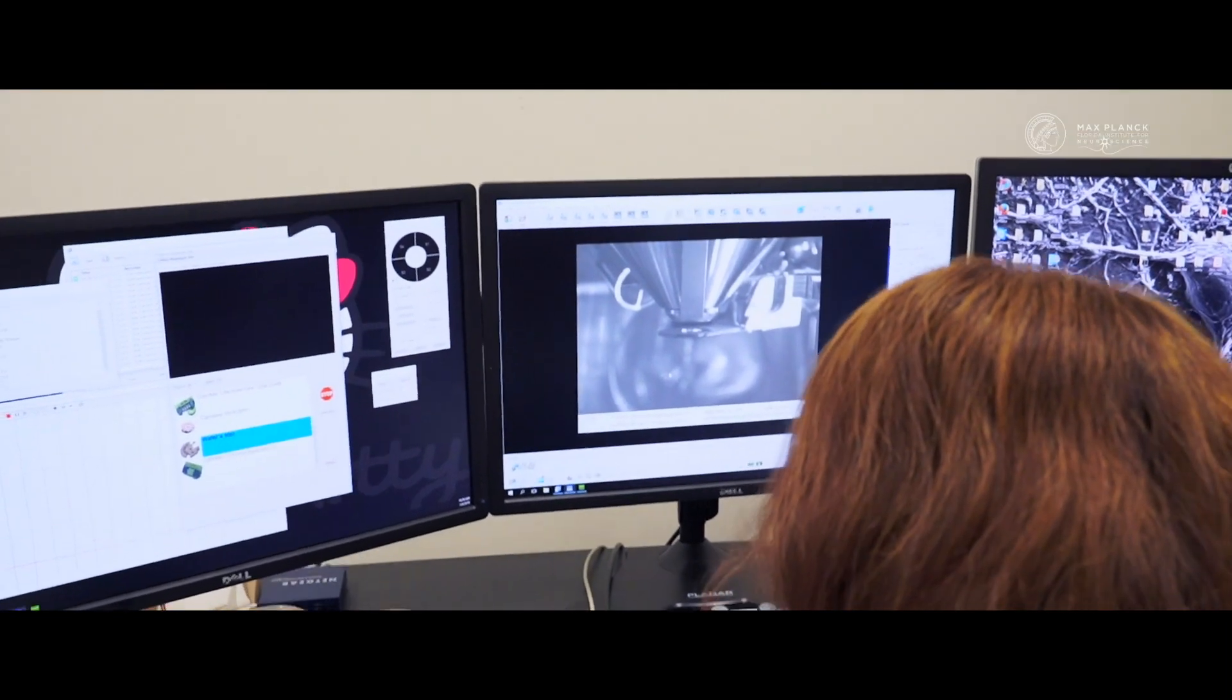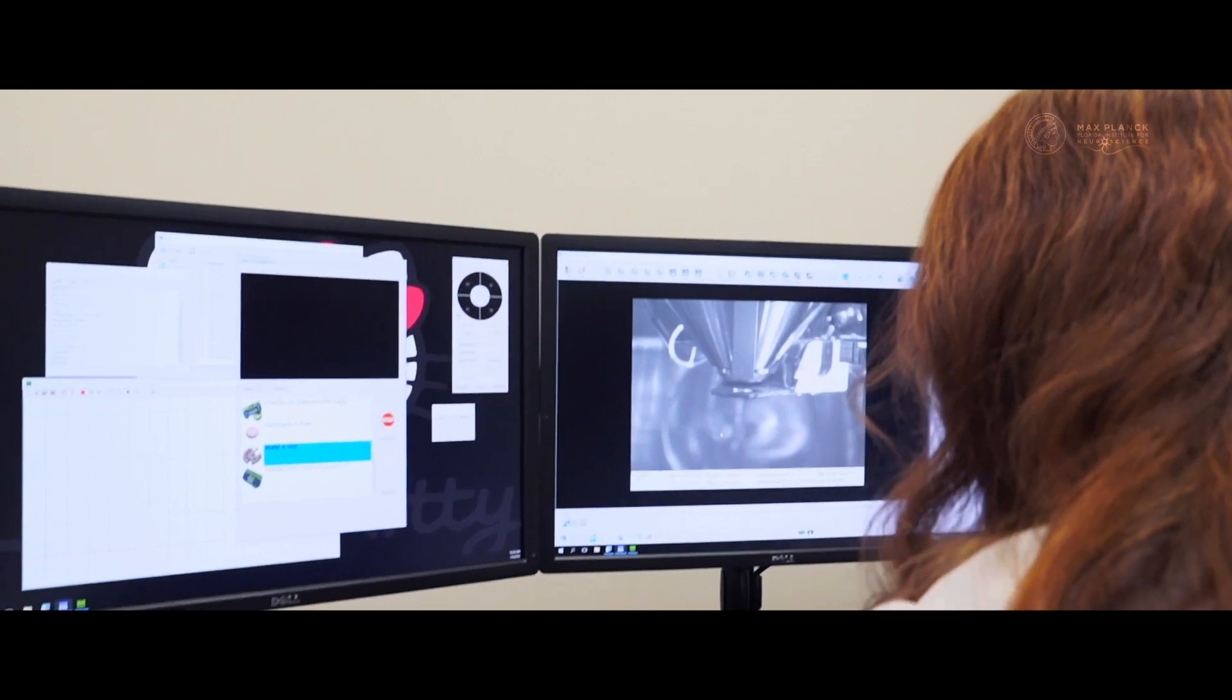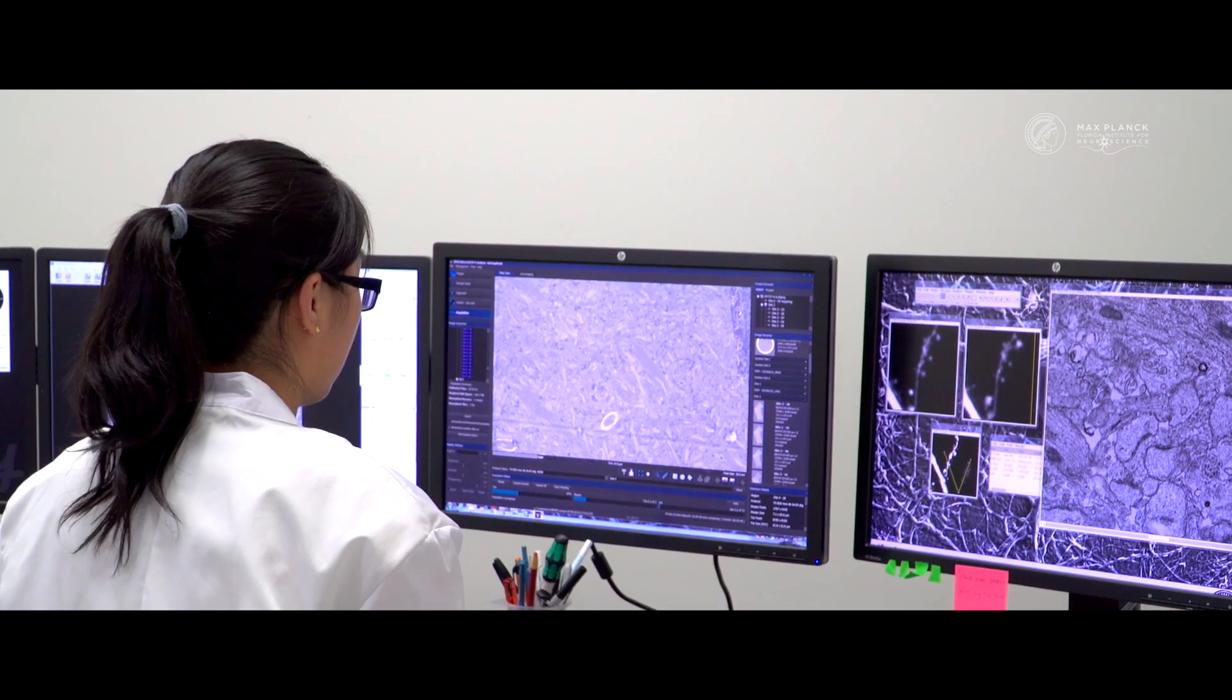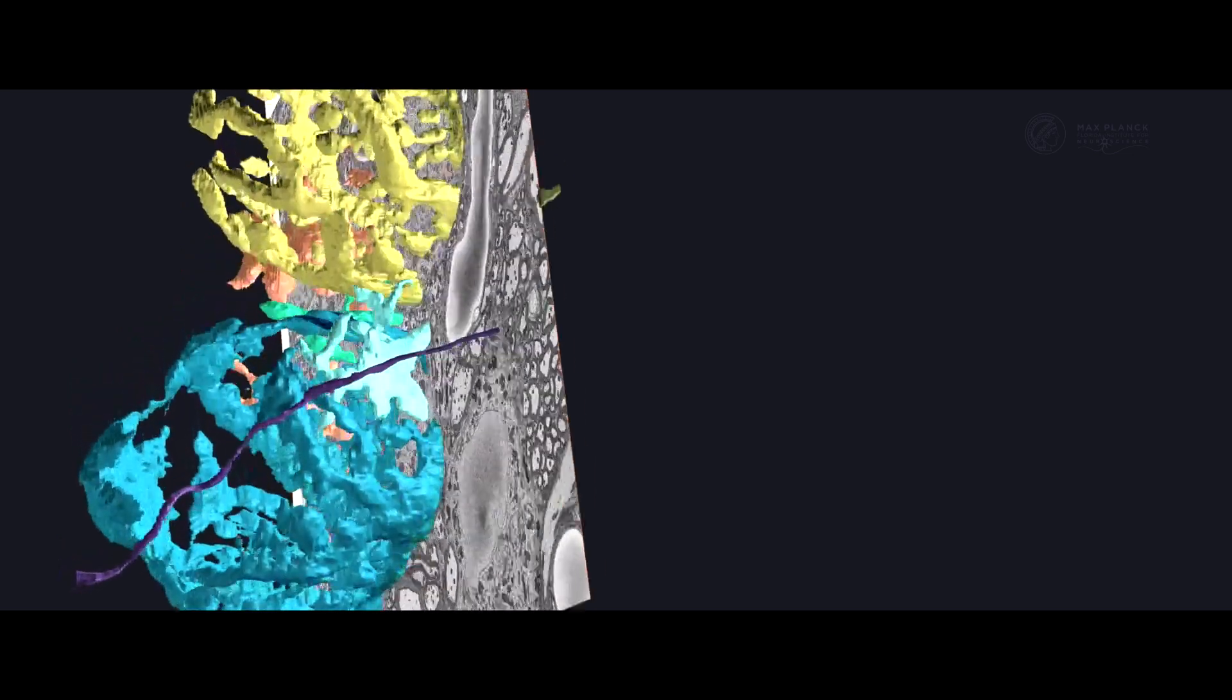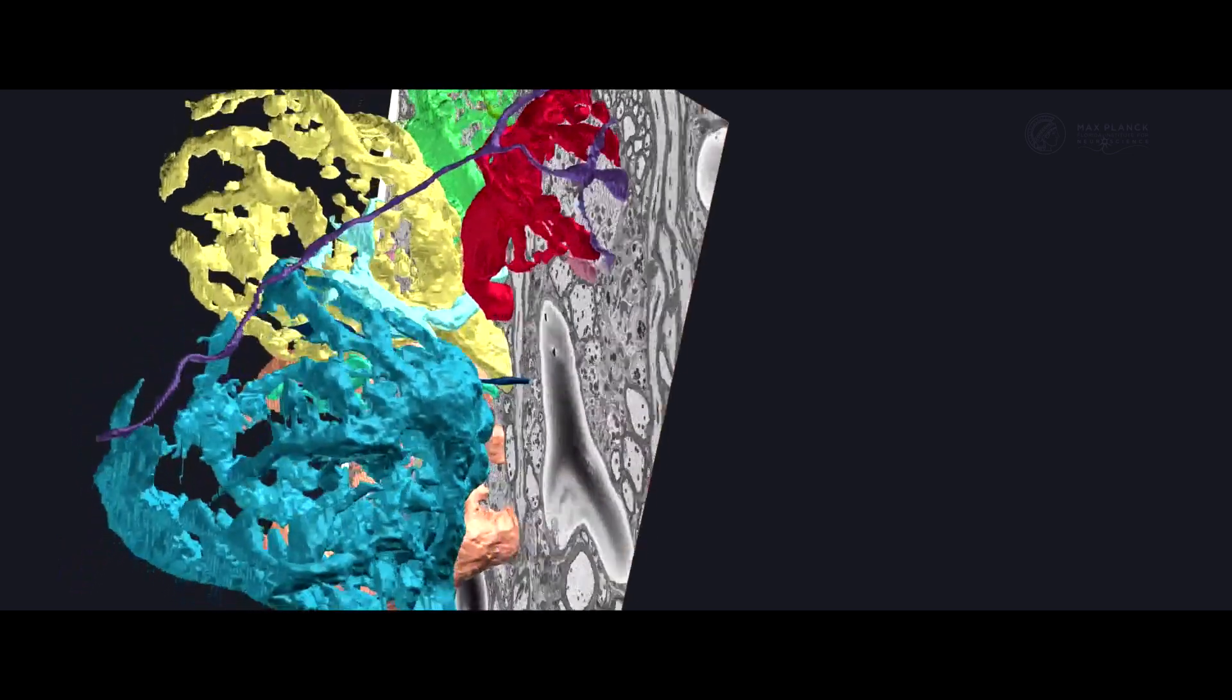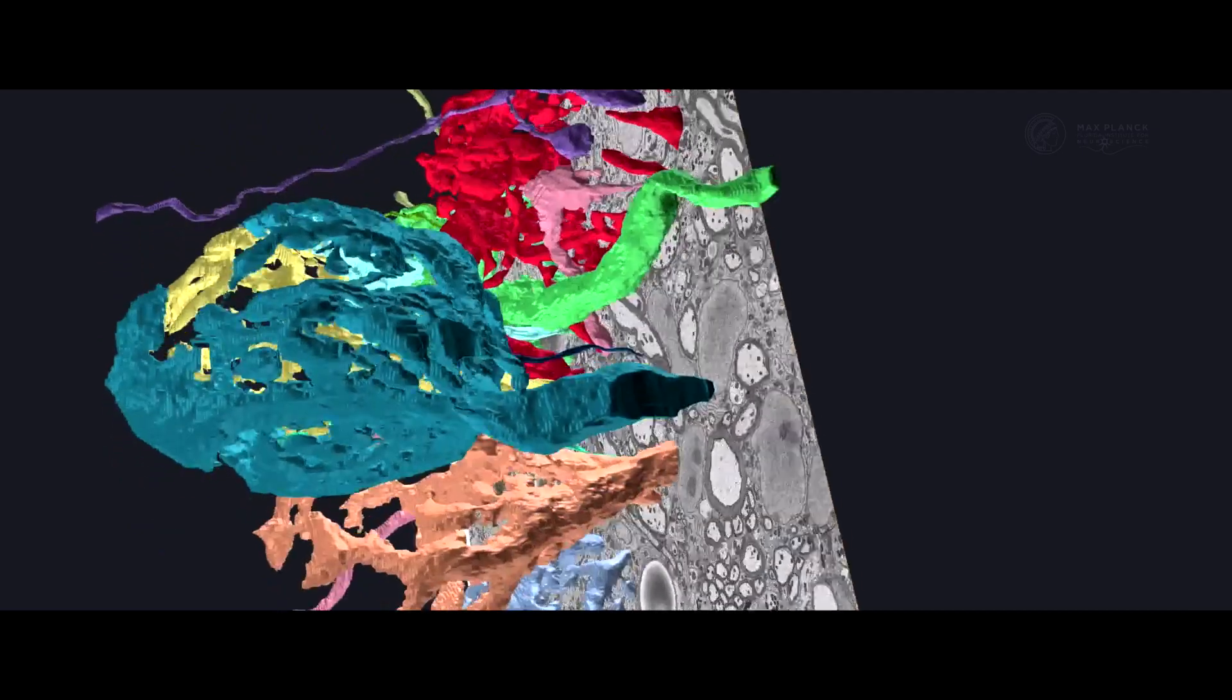With the use of the ATLAS software by Zeiss, we can automatically acquire a large volume of images. We can then correlate these high-resolution images with previously recorded functional data for a better understanding of the cell.